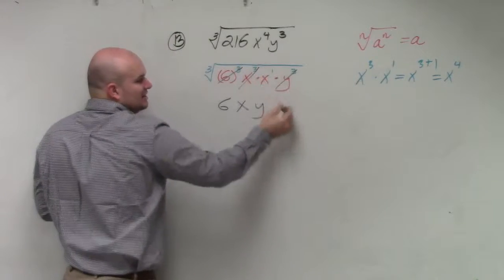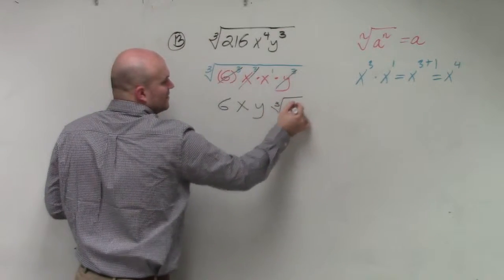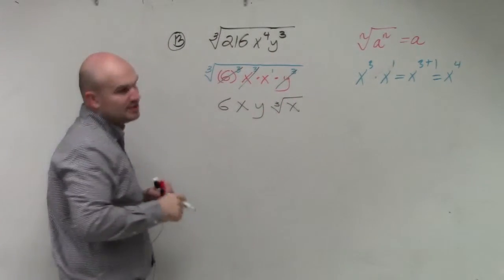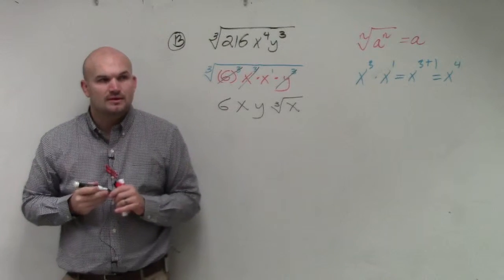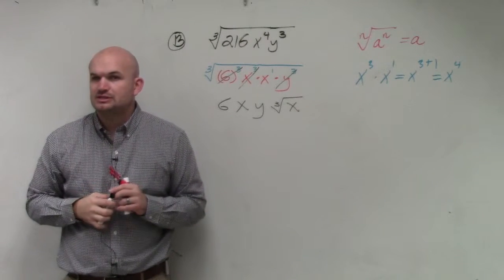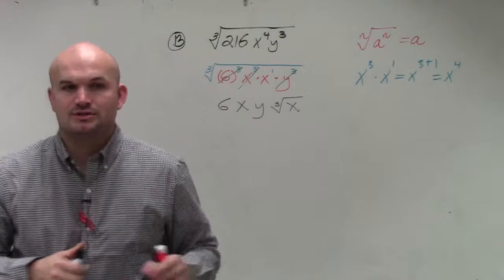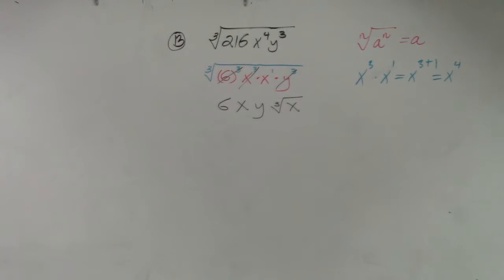Therefore, the only thing left under the radical is the cube root of x to the first power, which I can just write as x. Anybody have any questions?